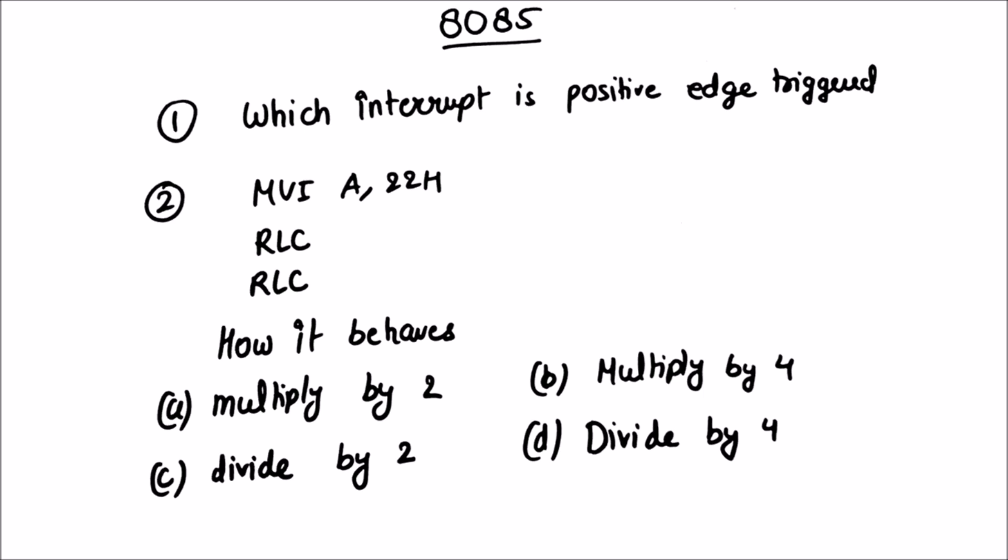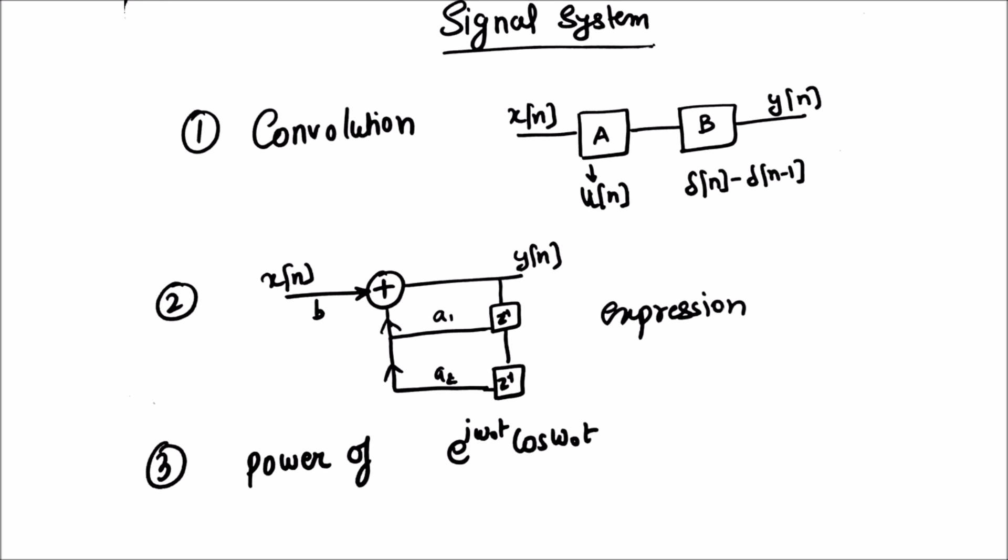Next was signal system. It was very easy. One question was convolution, simple convolution. They asked about the expression of yn and the block diagram was given as shown. Next, a diagram was given and expression was asked for yn. One question was to find the power of the signal e raised to j omega 0t times cos omega 0t.